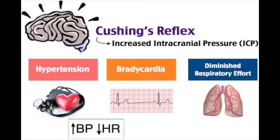Management of severe TBI includes a neurosurgical ICU with frequent clinical and neurological assessments. Prevent hypoxia (PaO2 under 60) and hypotension (systolic under 100), and use ET intubation. Surgical evaluation for hematomas is based on size, mass effect, and neurological status, with reduction of intracranial pressure via head-of-bed elevation, hyperventilation, and mannitol. Hyperventilation should be avoided in the first 24 to 48 hours and should not exceed a PaCO2 under 30 mmHg, except as a temporizing measure for impending cerebral herniation.